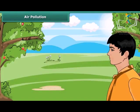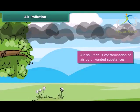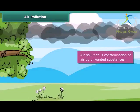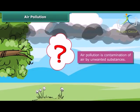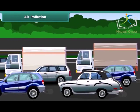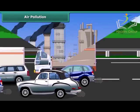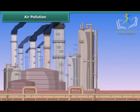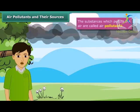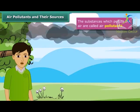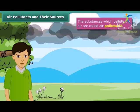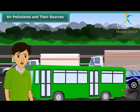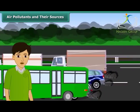Air is necessary for our lives, but air is getting polluted day by day due to the presence of unwanted substances in it. These substances are released when fuels burn in vehicles, or factories and power plants produce them as gaseous wastes. The toxic gases that pollute air include carbon dioxide, sulfur dioxide, nitrogen dioxide, and carbon monoxide — often released by the engines of vehicles like trucks and buses.